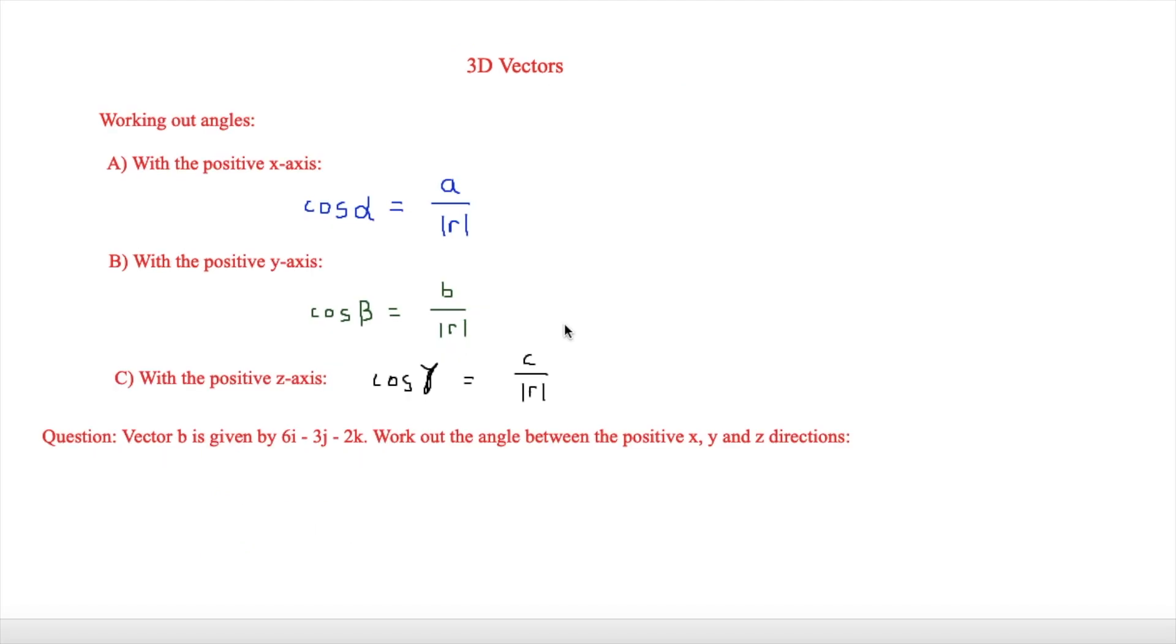So the next thing to look at in 3D vectors is how we work out angles. And there's three different types of angles that we can work out. So for example we can work it out when it's with the positive x-axis, and this says that cos alpha equals a over the magnitude of r. Then when it's with the positive y-axis cos beta equals b over the magnitude of r. And then with the positive z-axis cos gamma equals c over the magnitude of r.